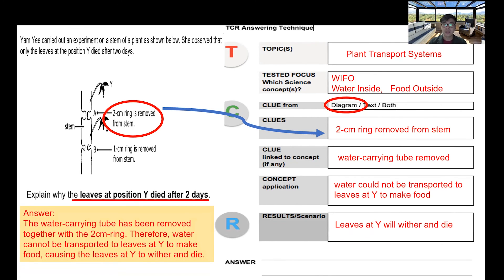Let's put everything together and that is our answer. The water carrying tube has been removed together with the two centimeter ring. Therefore, water cannot be transported to the leaf at Y to make food, causing the leaves at Y to wither and die. Hope you understand through using the TCR answering technique.